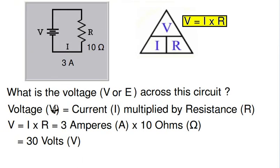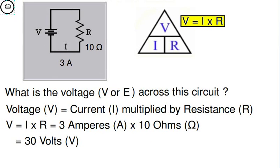Looking at another example — the same circuit, but this time we know the current is 3 amperes and the resistance is 10 ohms. We want to know the voltage V across this circuit. Note that sometimes E is used for voltage instead of V, but we're using V primarily here. Covering up V in our Ohm's law memory aid gives us IR, so voltage equals current times resistance: 3 amperes times 10 ohms equals 30 volts. So 30 volts is pushing 3 amperes through the 10 ohm resistor.